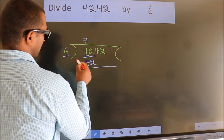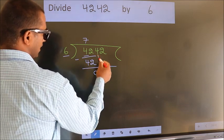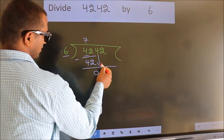Now we should subtract. We get 0. After this, bring down the beside number. So, 4 down.